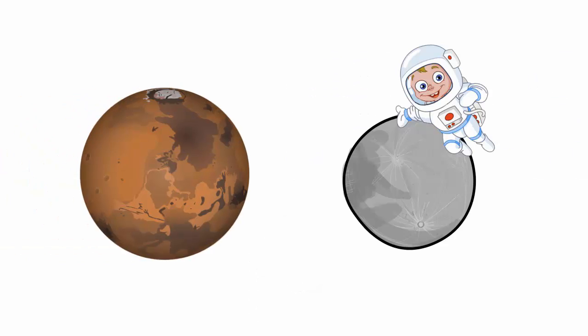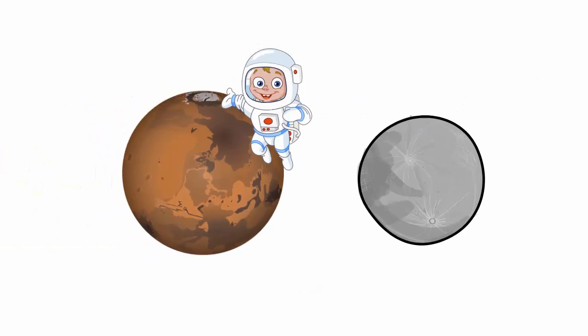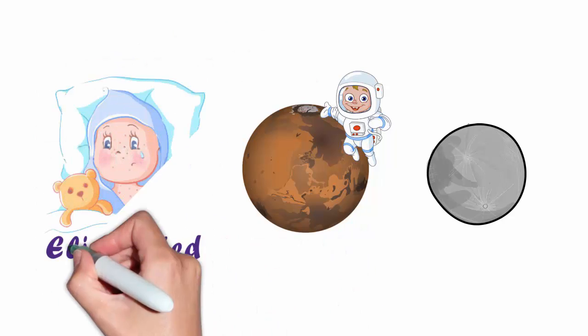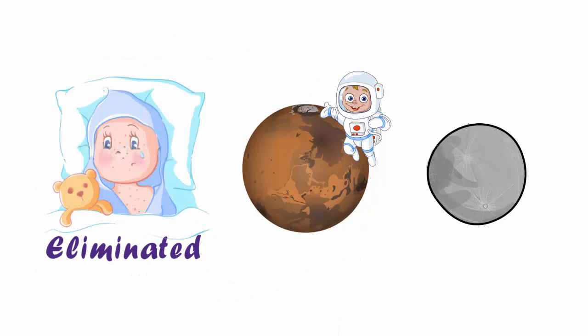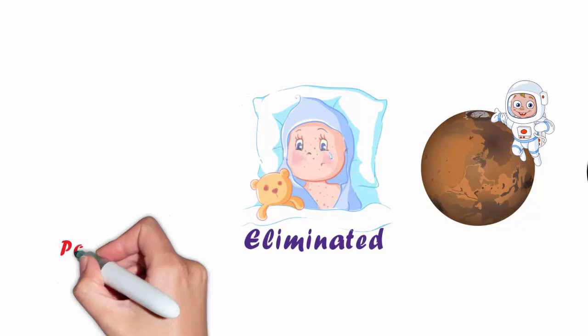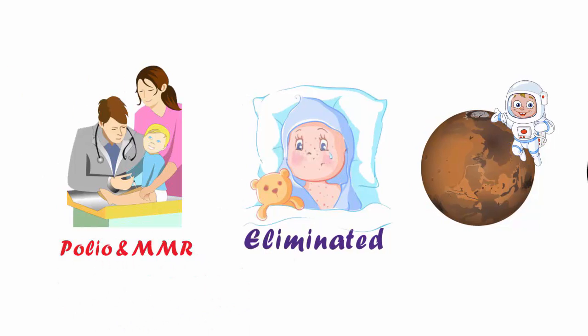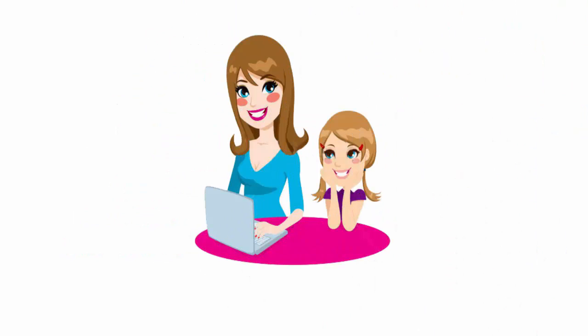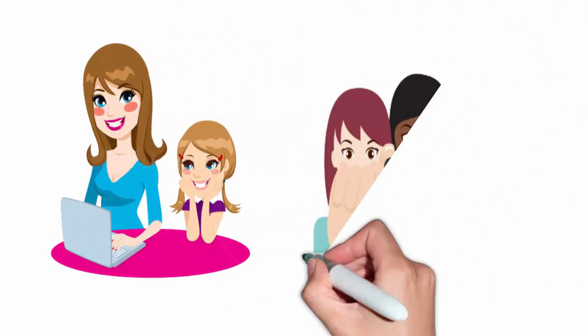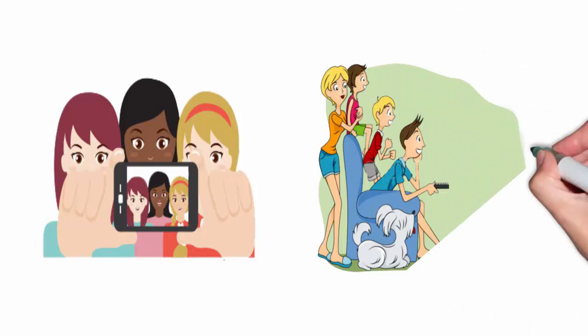Science put us on the moon and will probably take us to Mars. Science has eliminated smallpox from the face of the Earth. Science has given us polio and MMR vaccinations that have saved millions of people from devastation. Science has given us computers on our desks, iPhones in our pockets, and TVs in our homes. Science has increased our life expectancy by more than 25 years over the last 150 years.